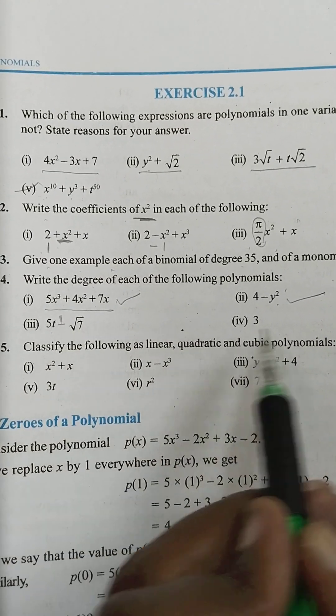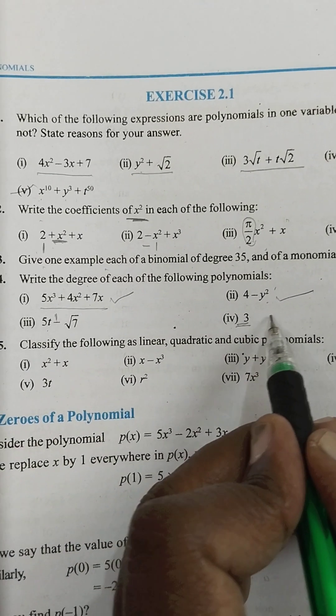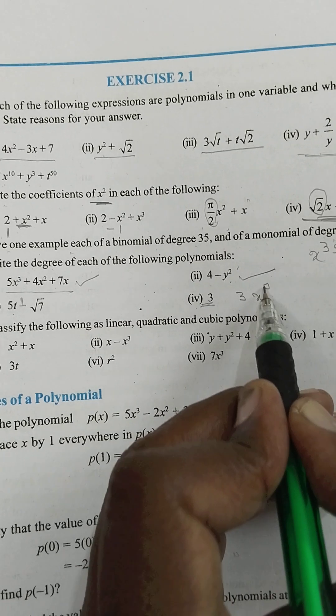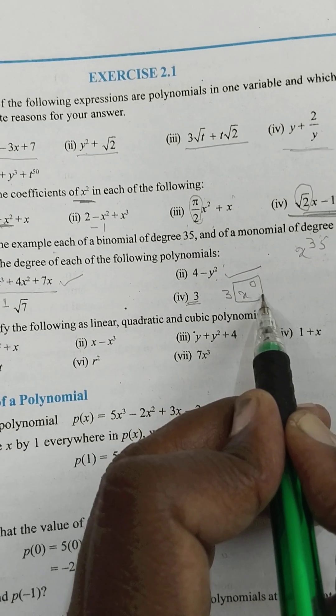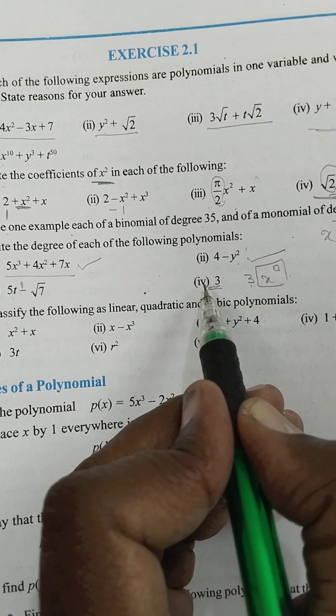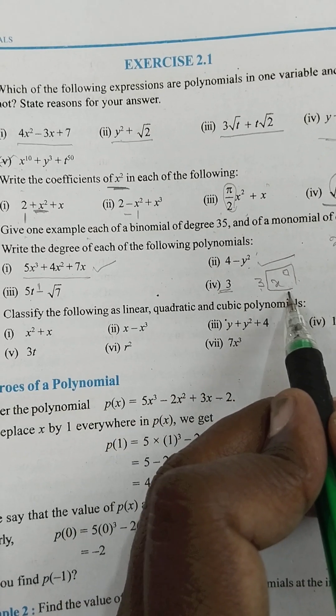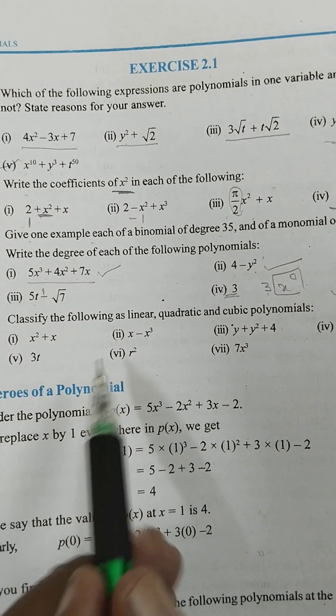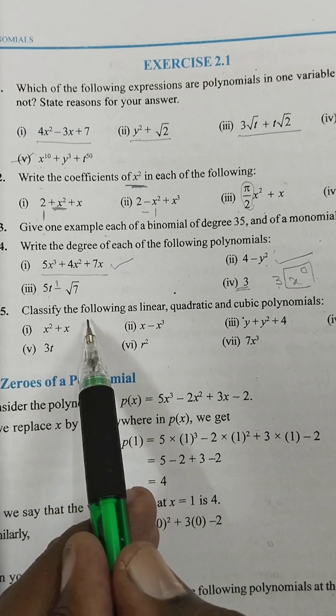Here 1, here 0. Because of 3 into x power 0, x power 0 means 1, 1 into 3 is 3, so degree is 0. Every constant term you have to write the degree is 0.